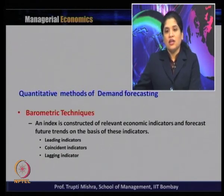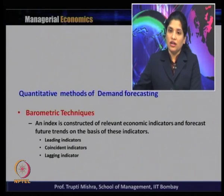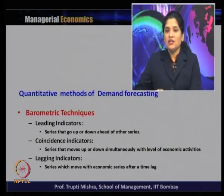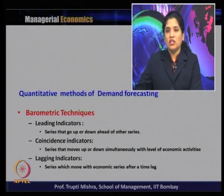What are the indicators taken for construction of the index? We take three types of indicators: leading indicators, coincident indicators, and lagging indicators. A leading indicator is one where the series goes up or down ahead of the other series. For example, if the price-quantity series always moves ahead of the income-quantity series, we say price-quantity is a leading indicator compared to income and quantity.